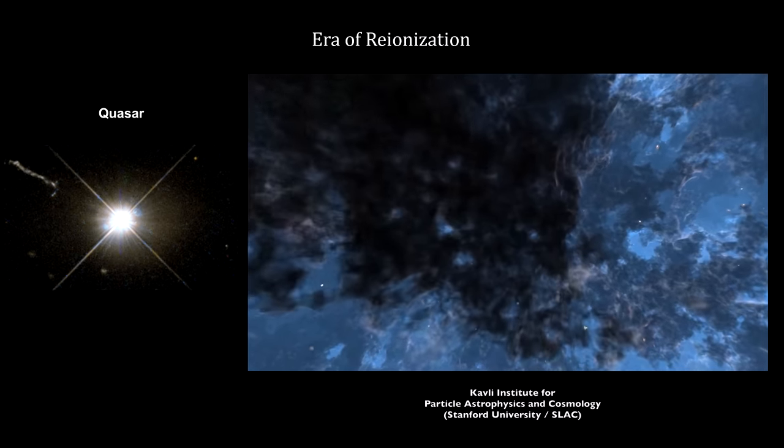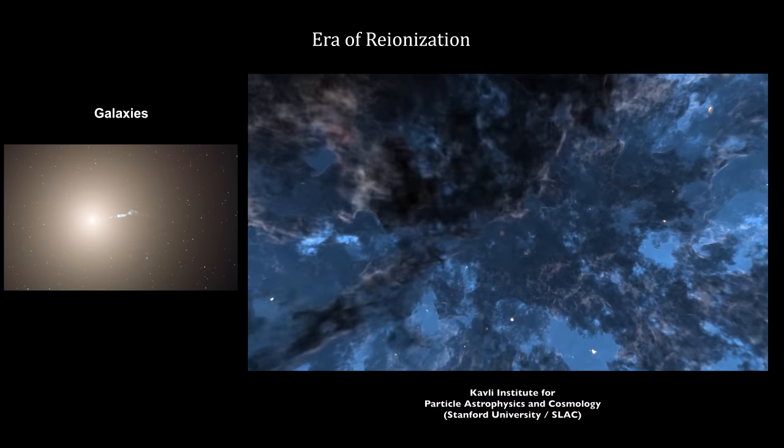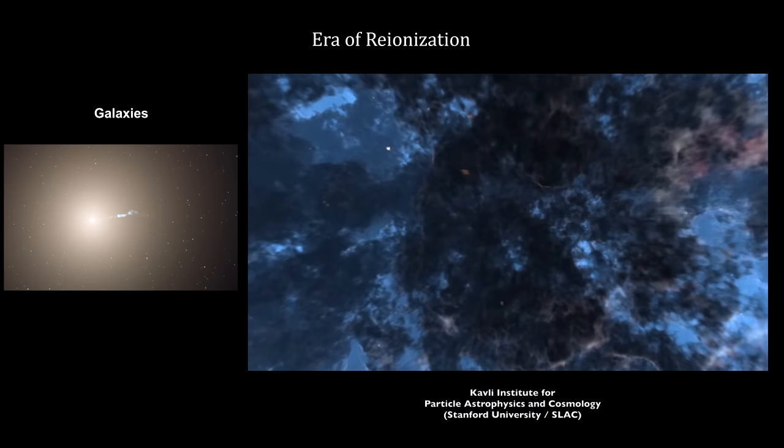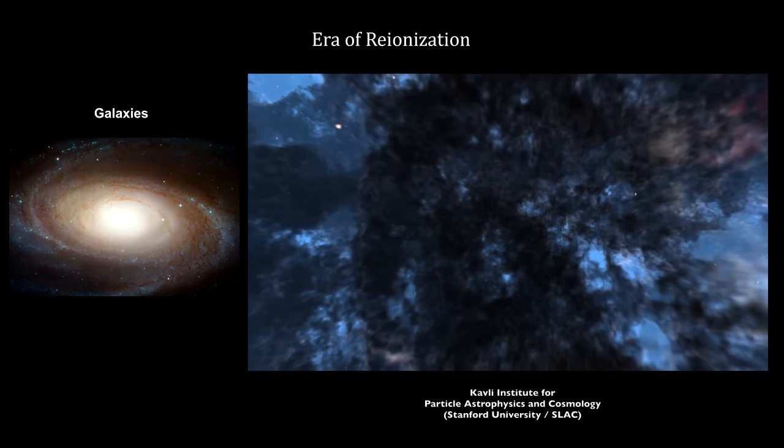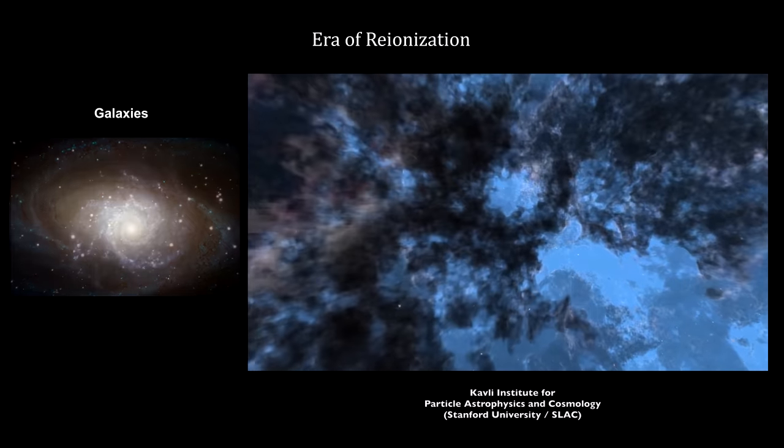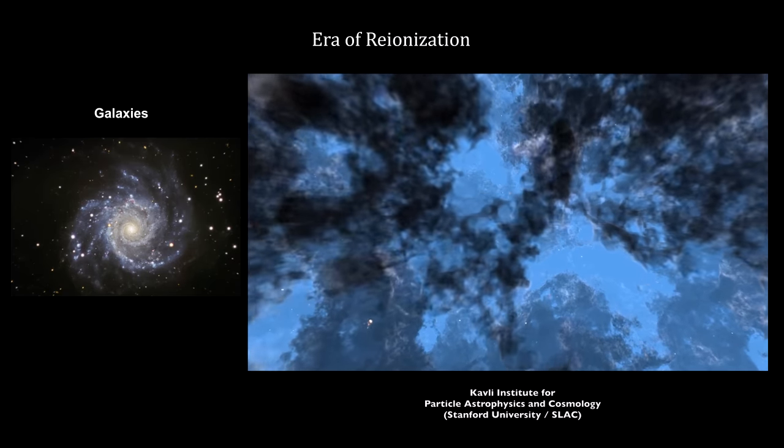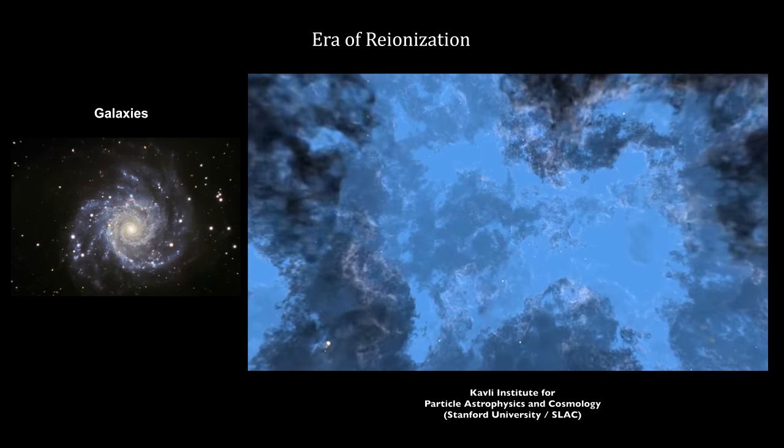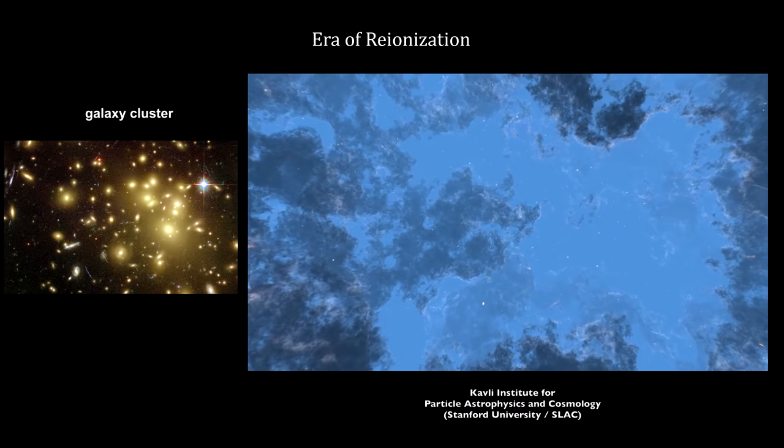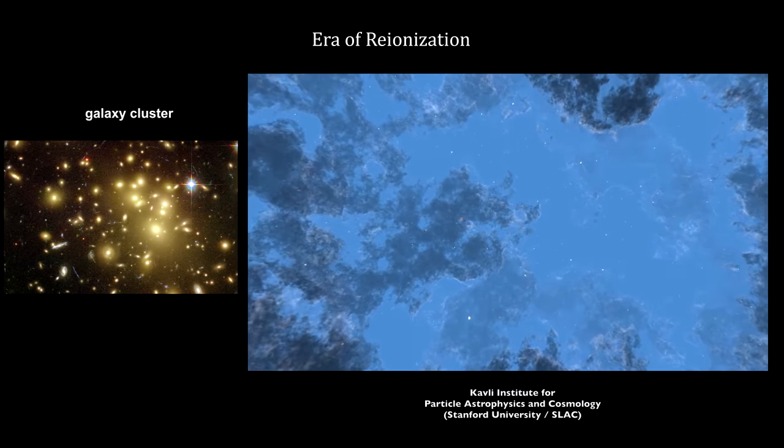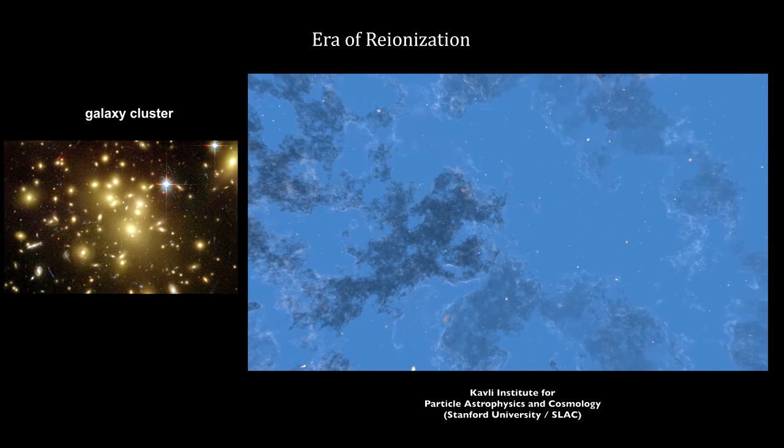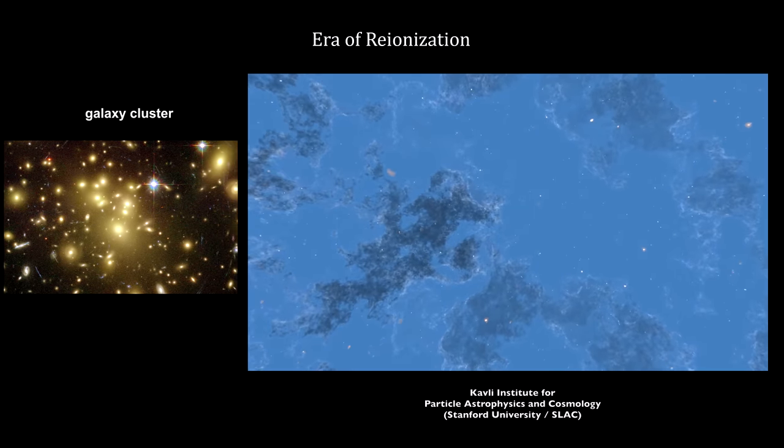In this simulation, the dark regions are filled with hydrogen atoms. The light areas have been ionized, and light can travel through it with minimal losses. Over time, the ionized regions around stars cleared entire galaxies. This process ended around 1.1 billion years after the Big Bang, with all of space cleared for light travel.